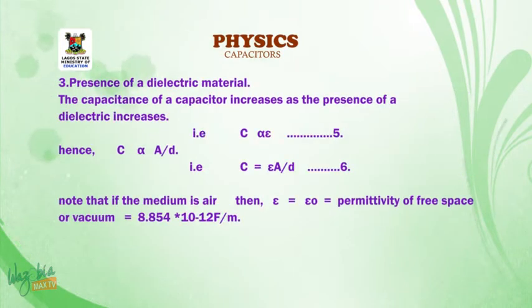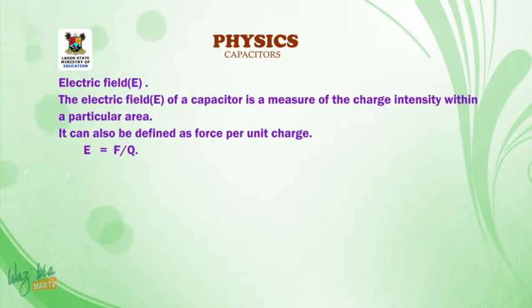Presence of the dielectric material. The capacitance of a capacitor increases as the presence of the dielectric increases. That is, C is proportional to A over D. Hence, C is equal to epsilon A over D. Note that if the medium is air, then epsilon is equal to epsilon 0, which is called permittivity of free space or vacuum, which gives us a value of 8.854 times 10 raised to negative 12 farad per meter.